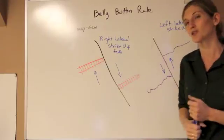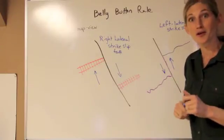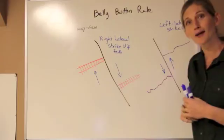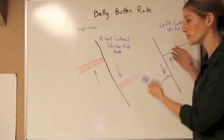And so that's how you can determine if something is a right lateral or left lateral strike-slip fault from using an aerial photograph, topographic map, or some diagram.